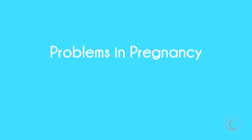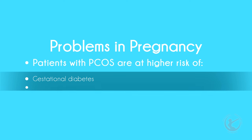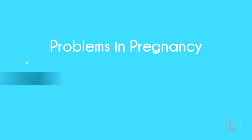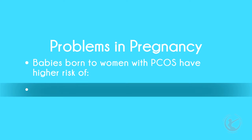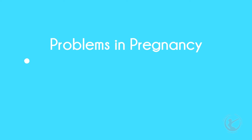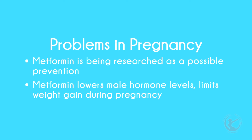Problems in pregnancy: patients with PCOS do not necessarily need specialist management in pregnancy, but their primary caregivers should be very aware that they are at higher risk of gestational diabetes, pregnancy-induced high blood pressure called preeclampsia, and premature delivery, and refer to a specialist appropriately. Babies born to women with PCOS have a higher risk of spending time in a neonatal intensive care unit. Most of these problems occur in multiple birth pregnancies — twins or triplets — which may be a result of clomiphene use. Researchers are studying whether metformin can prevent or reduce the chances of having problems while pregnant. Metformin also lowers male hormone levels and limits weight gain in women who are obese when they get pregnant.